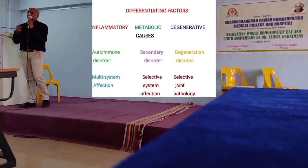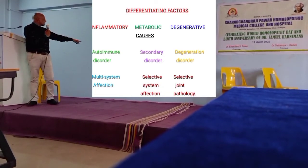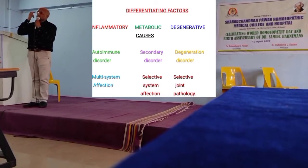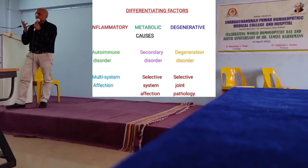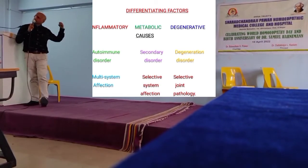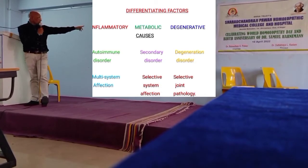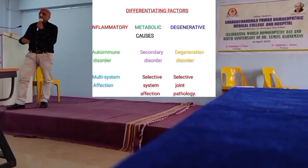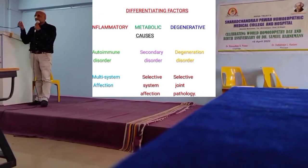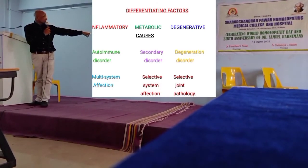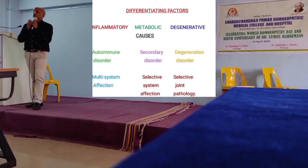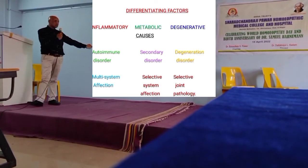Inflammatory arthritis such as rheumatoid arthritis is a multi-system condition. It is not only the joints which get affected - you can get affections of the heart, eyes, veins, abdomen, and blood, including anemia. Any inflammatory variety gives multi-system affections. In the metabolic variety there are selective system affections - either a problem with the kidney system, the gallbladder, or the renal system. In degenerative arthritis there is selective joint pathology - either the right knee or both knees are degenerated. But in rheumatoid and inflammatory arthritis there is multi-system affection.